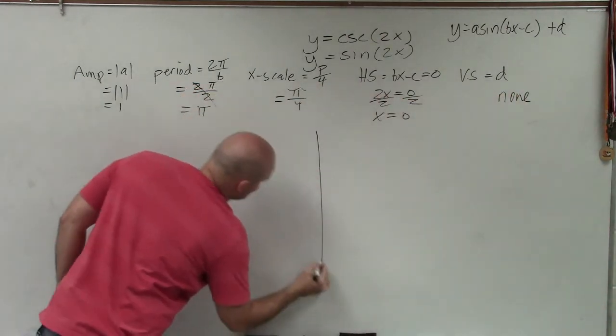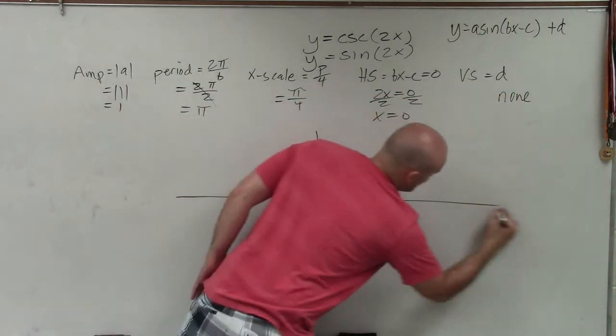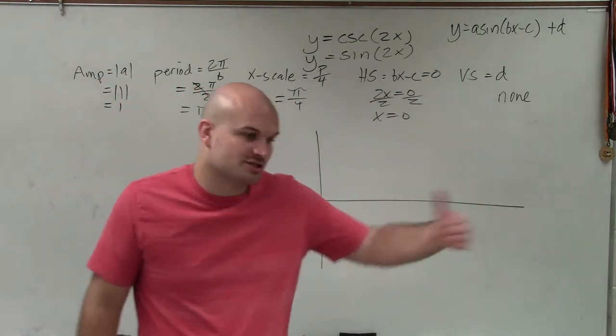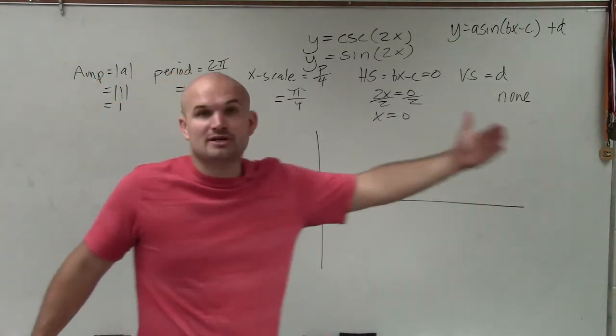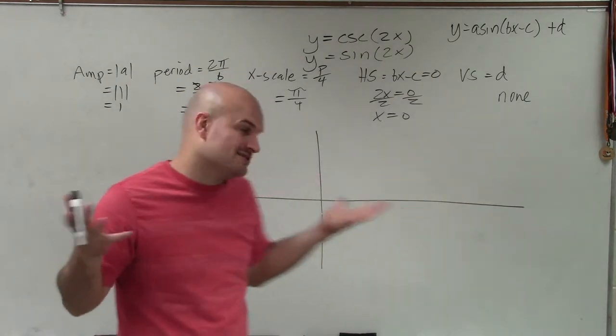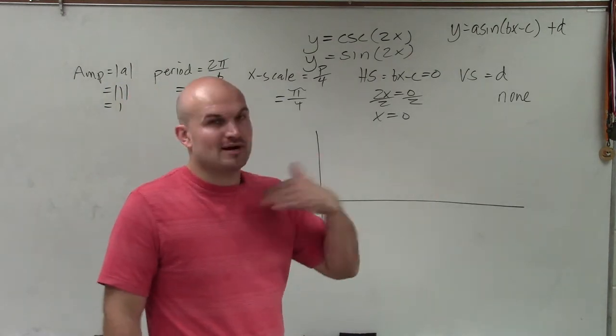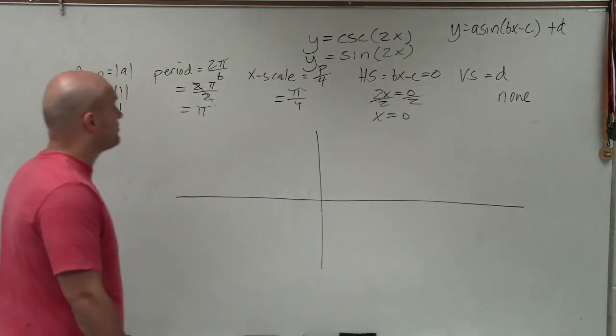So when we're graphing, usually we like to provide two periods. Then we can do two periods to the right, two periods to the left, or one period to the right, one period to the left. It doesn't really matter. A lot of times, I like to do just a period to the right and a period to the left, depending on the problem.